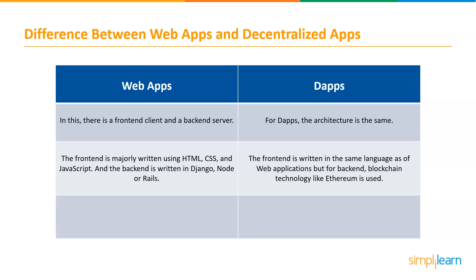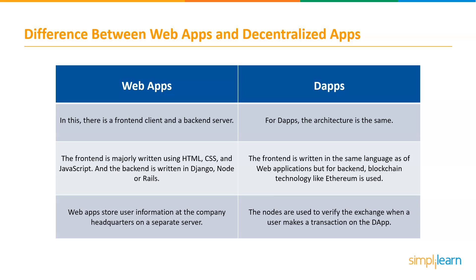In web apps and DApps, they both interact with each other with JSON messages, similar to other applications. Web apps store user information at the company headquarters on a separate server, usually. However, DApps consist of data created by the user. Therefore, the nodes are used to verify the exchange when a user makes a transaction on the DApps.